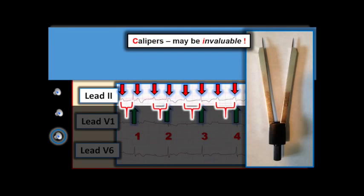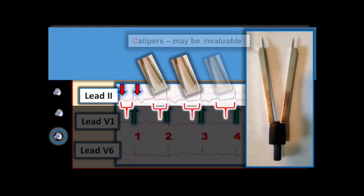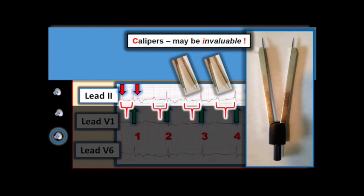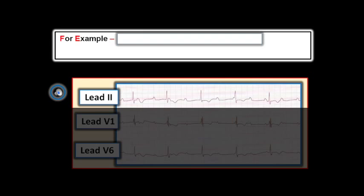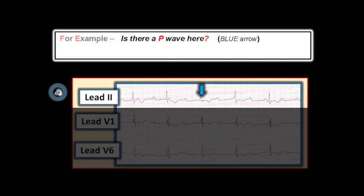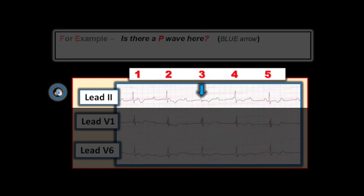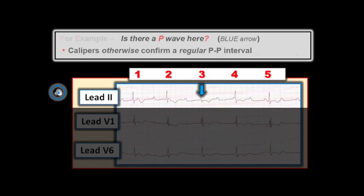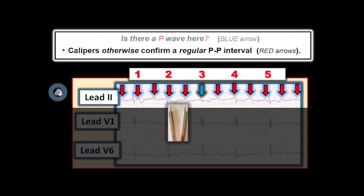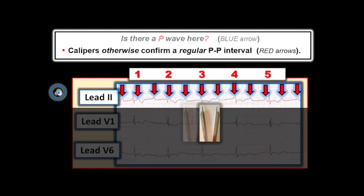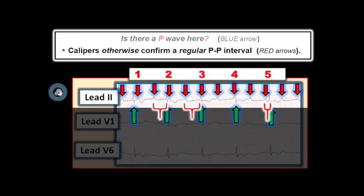Note: Using calipers is an invaluable way to facilitate diagnosis of complex tracings such as this one. In my opinion, it's the only way to quickly and accurately determine if P-waves and QRS complexes are regular and related to each other. For example, is there a P-wave here (blue arrow)? We don't see any P-wave, but we wonder if a P-wave might be hidden within the QRS complex of beat number three. Calipers confirm that P-waves march out at a fairly regular P-to-P interval throughout this rhythm strip, so we surmise that the underlying atrial rhythm is indeed likely to be regular. The ventricular rhythm is regular, and there is no relation between P-waves and the QRS, as evidenced by the constantly changing PR interval before each QRS.